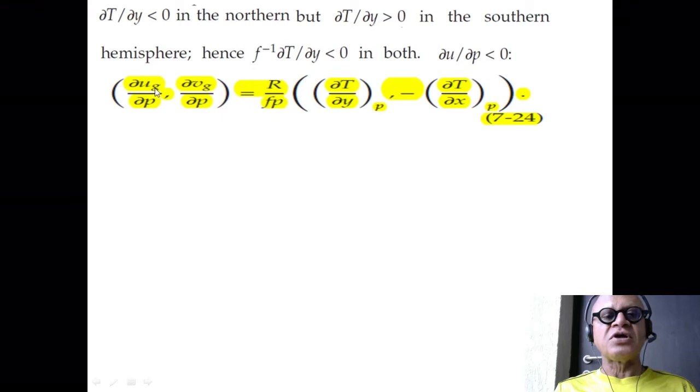Remembering our thermal wind equation in the pressure coordinate, dUg/dP, dVg/dP equals R over fp, written in terms of dT/dy and dT/dx. This is why we're going through these little arguments here.